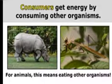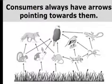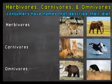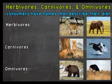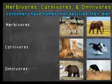Consumers get energy by consuming other organisms — meaning eating other organisms. They depend upon others. Consumers always have arrows pointed towards them in a food chain. Herbivores, carnivores and omnivores are all consumers.